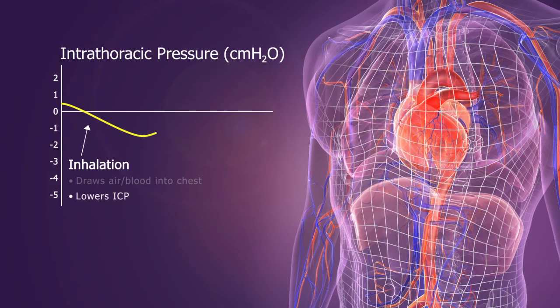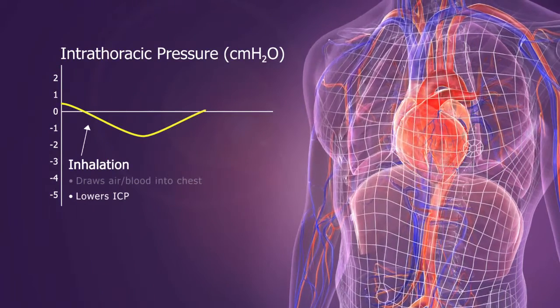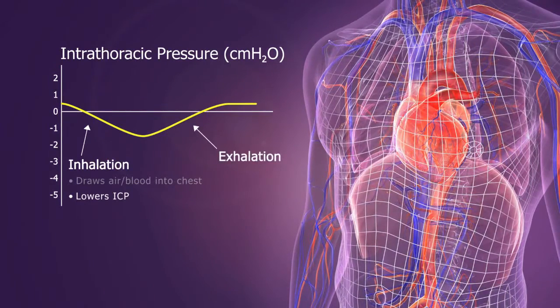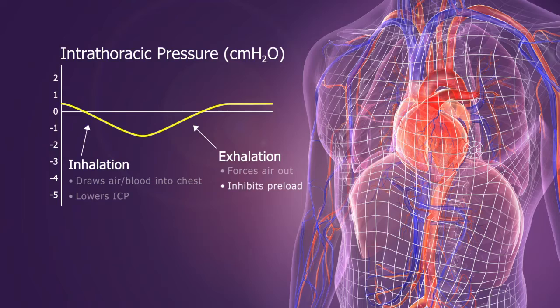As a person exhales, the diaphragm moves up and the chest wall moves in. This creates a positive pressure that forces air out, inhibits blood return to the chest, and slightly raises ICP.